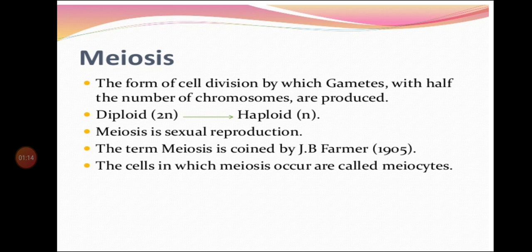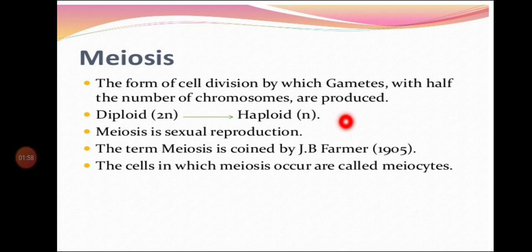Let us start with the definition of meiosis. The form of cell division by which gametes with half the number of chromosomes are produced is known as meiosis. Diploid (2N) becomes haploid (N) — it becomes half — so diploid condition results in haploid condition.